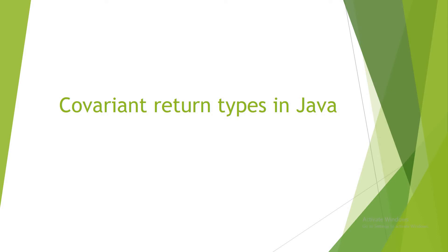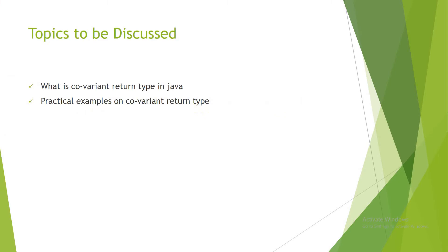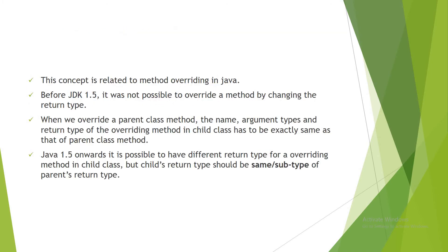Hello everyone, today we are going to discuss covariant return types in Java. Topics to be discussed: what is covariant return type and practical examples. First we will discuss the theory part and then move to Eclipse for coding. This concept is related to method overriding in Java. Before JDK 1.5, it was not possible to override a method by changing the return type. When we override a parent class method, the name, argument types, and return type of the overriding method in the child class had to be exactly the same as that of the parent class method.